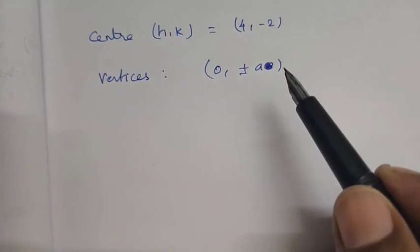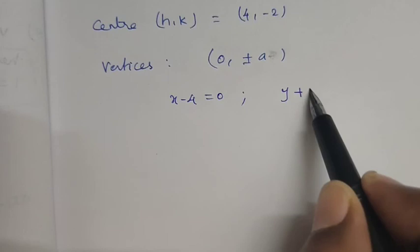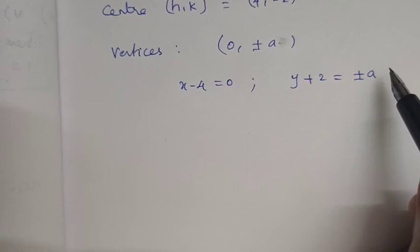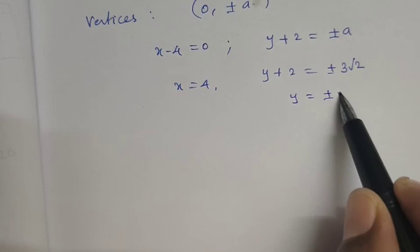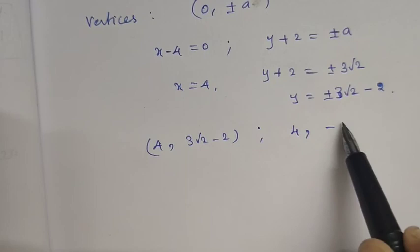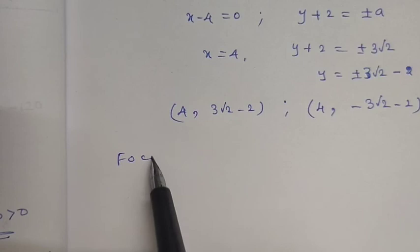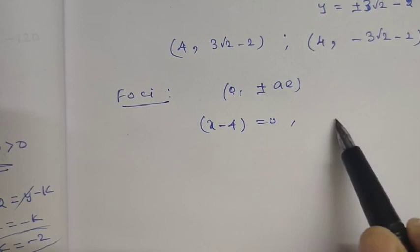For vertices: set x minus 4 equal to 0, so x equals 4, and y plus 2 equals plus or minus a equals plus or minus 3 root 2. So vertices are (4, 3 root 2 minus 2) and (4, minus 3 root 2 minus 2). For foci: x minus 4 equals 0 gives x equals 4, and y plus 2 equals plus or minus ae equals plus or minus root 6. So foci are (4, root 6 minus 2) and (4, minus root 6 minus 2).